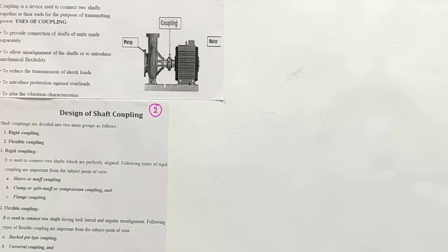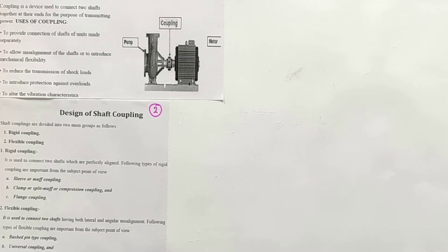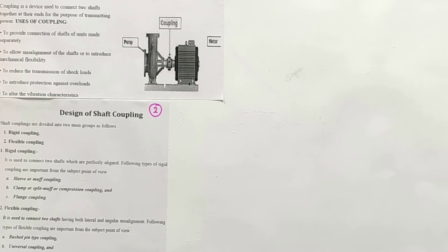The main purpose of coupling is joining two rotating shafts. There may be cases where both shafts are made by different manufacturers or have different diameters — coupling can reduce such errors and connect shafts of different diameters for transmission of motion.